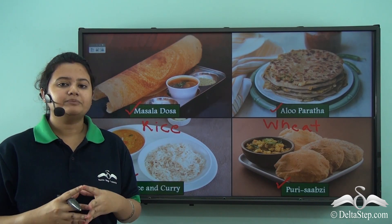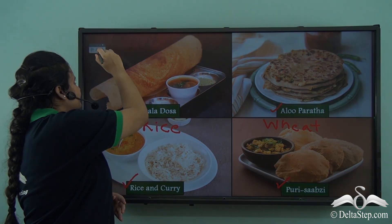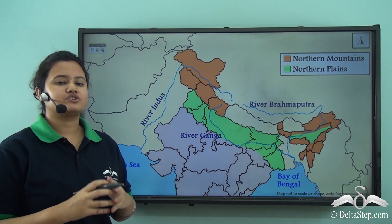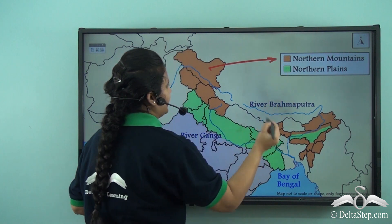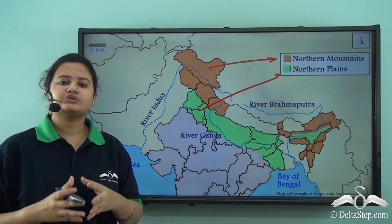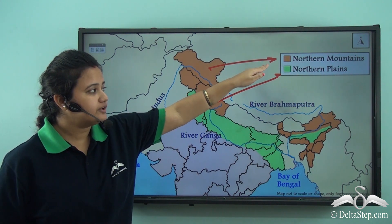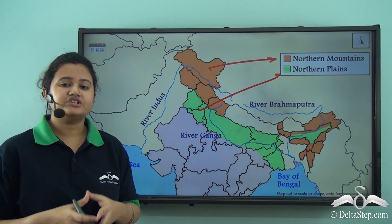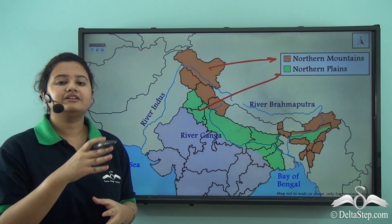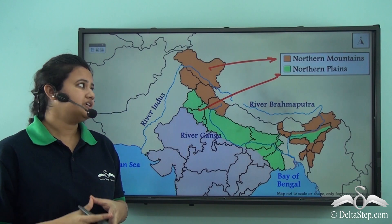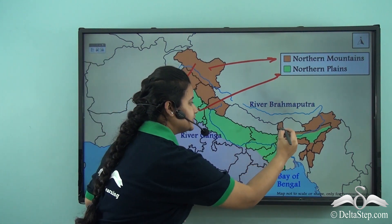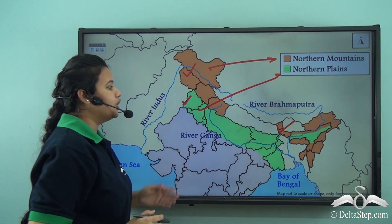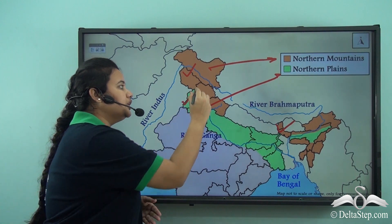Now let us locate the Northern Plains on the map of India. This map shows the two major physical divisions of India: the Northern Mountains and the Northern Plains. In our previous two lessons, we have already discussed about the Northern Mountains in detail. We know that it is a long stretch of mountain ranges consisting of several parallel chains, present mostly in the northernmost and northeastern part of our country. Just below the Northern Mountains, we have the Northern Plains — they lie to the south of the Northern Mountains.